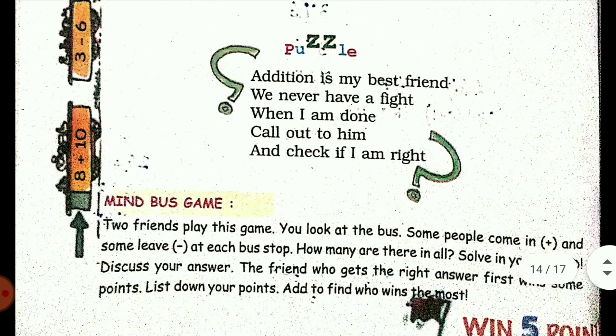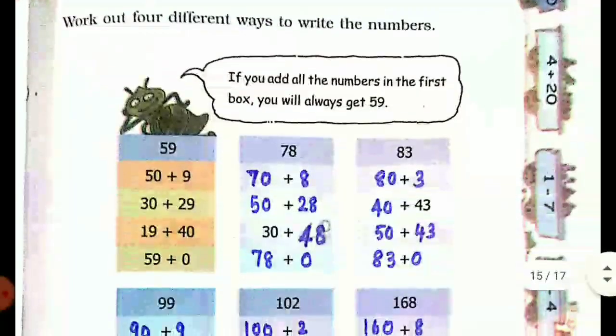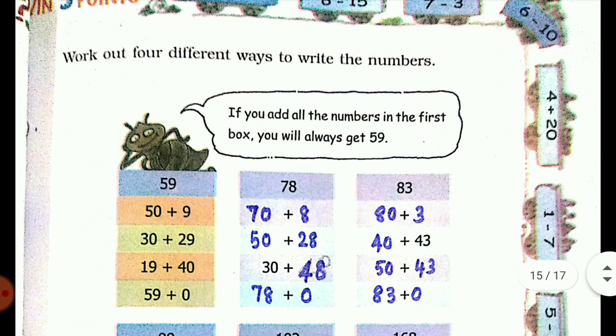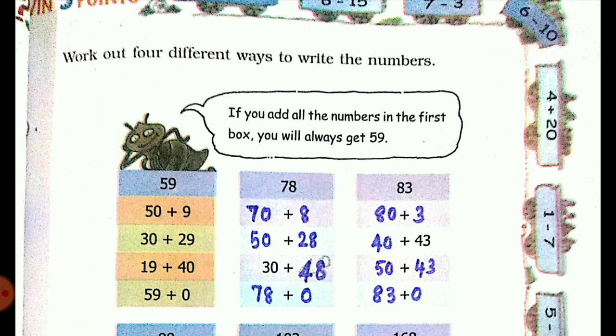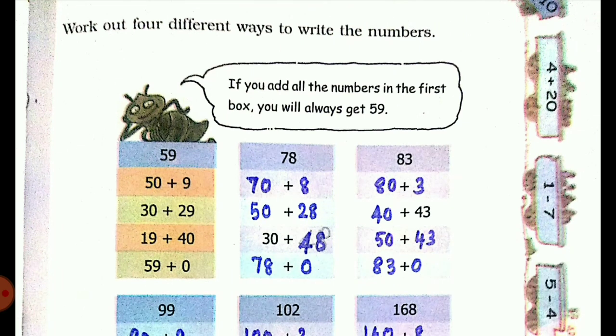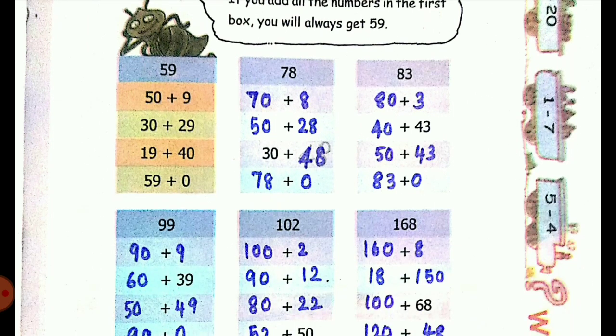Next, work out four different ways to write numbers. If you add all the numbers in the first box, you will always get 59. So what you should do is write combinations to get the number which is written on the top. 59 can be 50 plus 9, 30 plus 29, 19 plus 40, or 59 plus 0. Similarly, 78 can be written as 70 plus 8, 50 plus 28, 30 plus 48, or 78 plus 0.